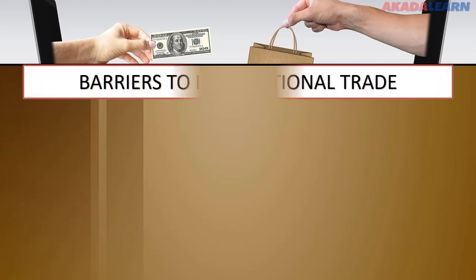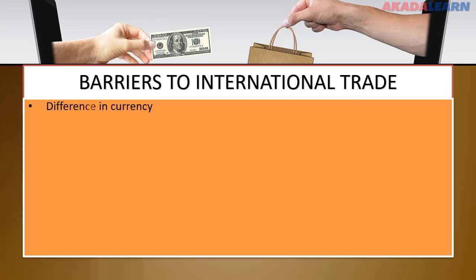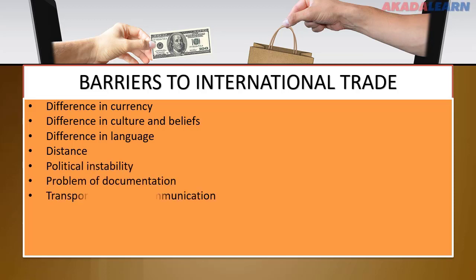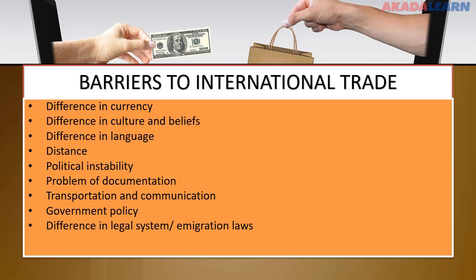Barriers or hindrances to international trade include: difference in currency, difference in culture and beliefs, difference in language, distance, political instability, problem of documentation, transportation and communication challenges, government policy, difference in legal system and immigration laws, and difference in weights and measures.